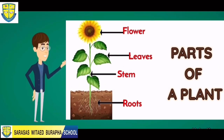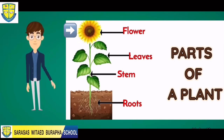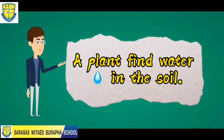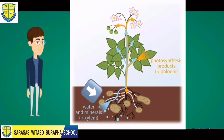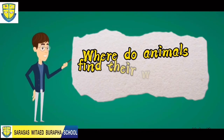Here are the parts of the plant: roots, stem, leaves, and flower. Plants find water in the soil. A plant's roots take the water from the soil and move it up the stem to the leaves.